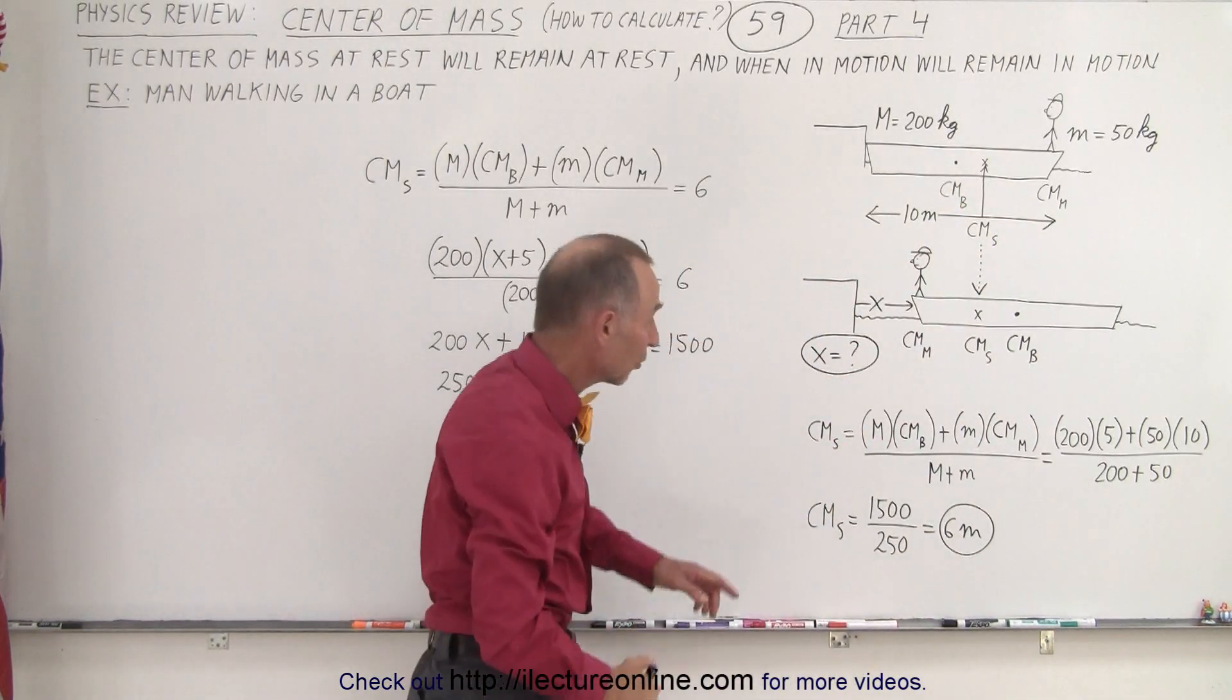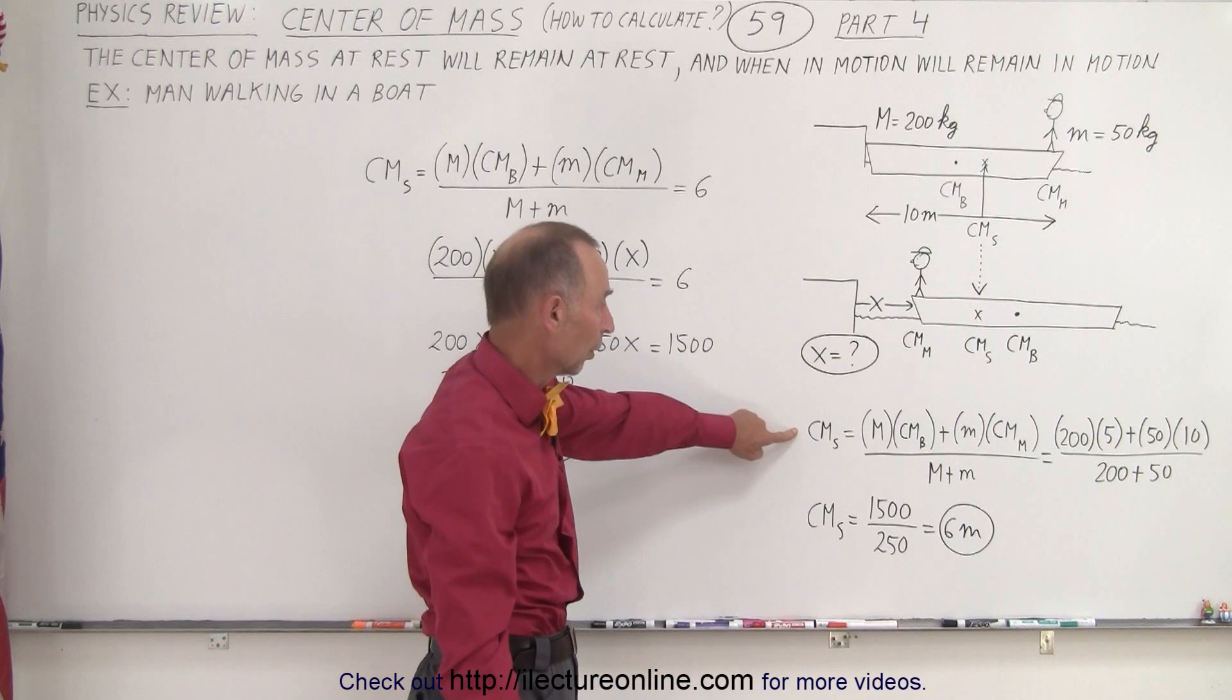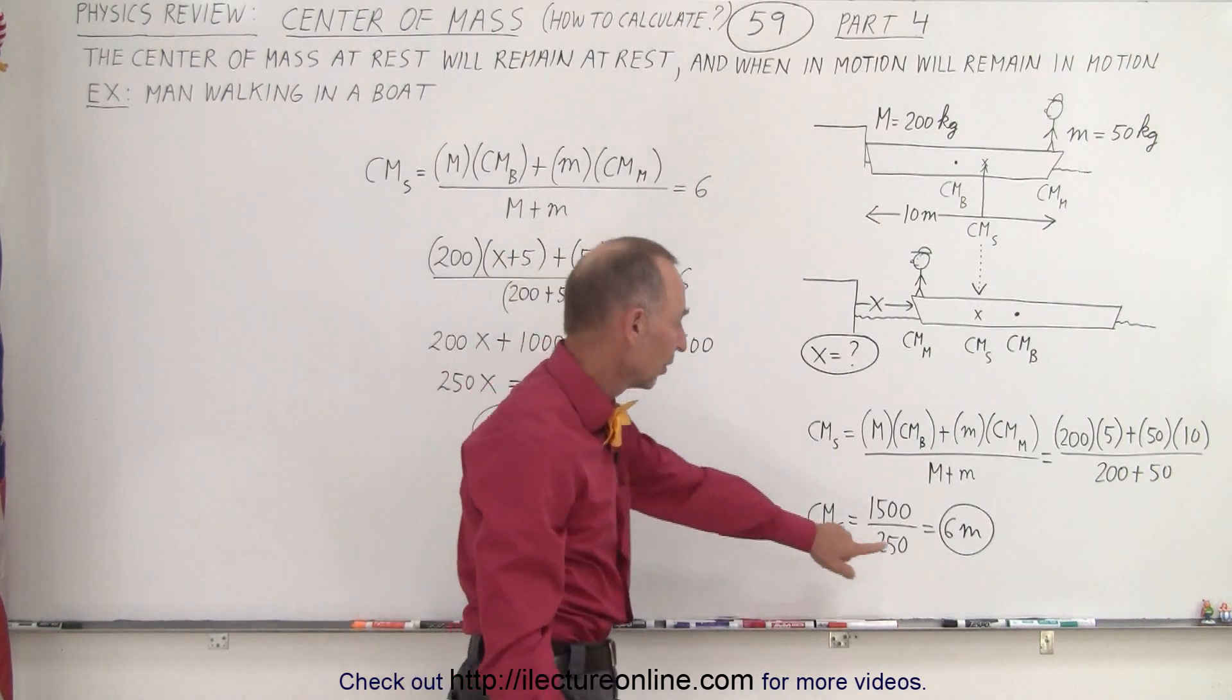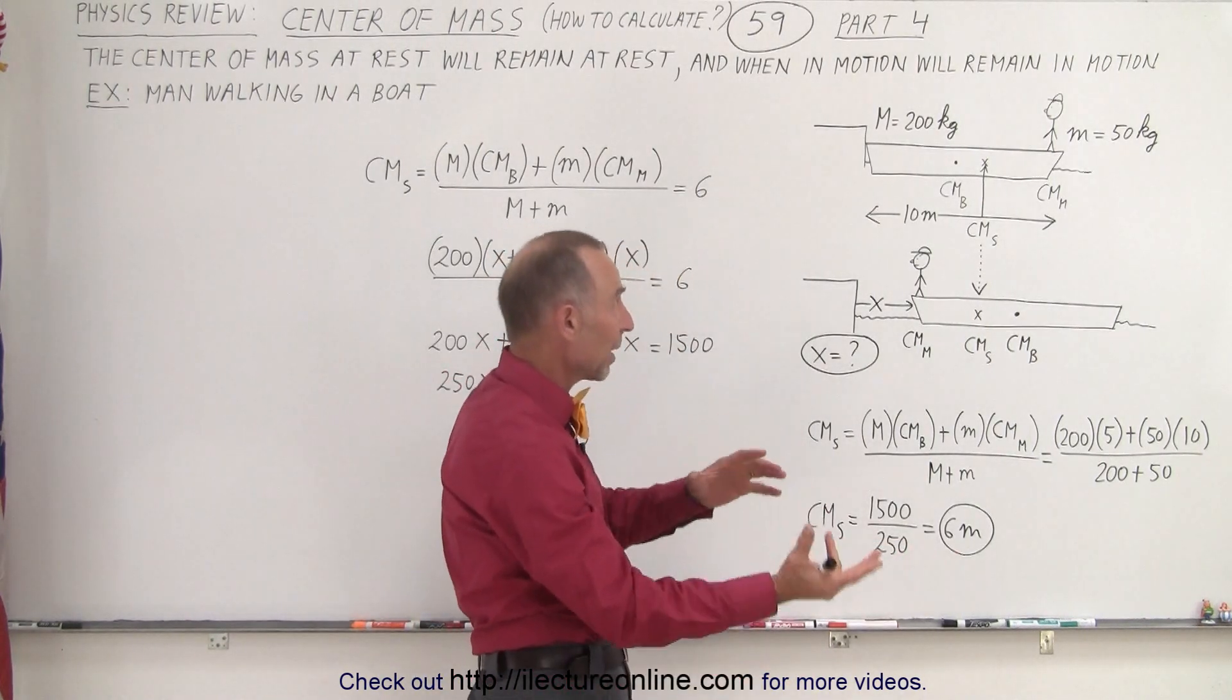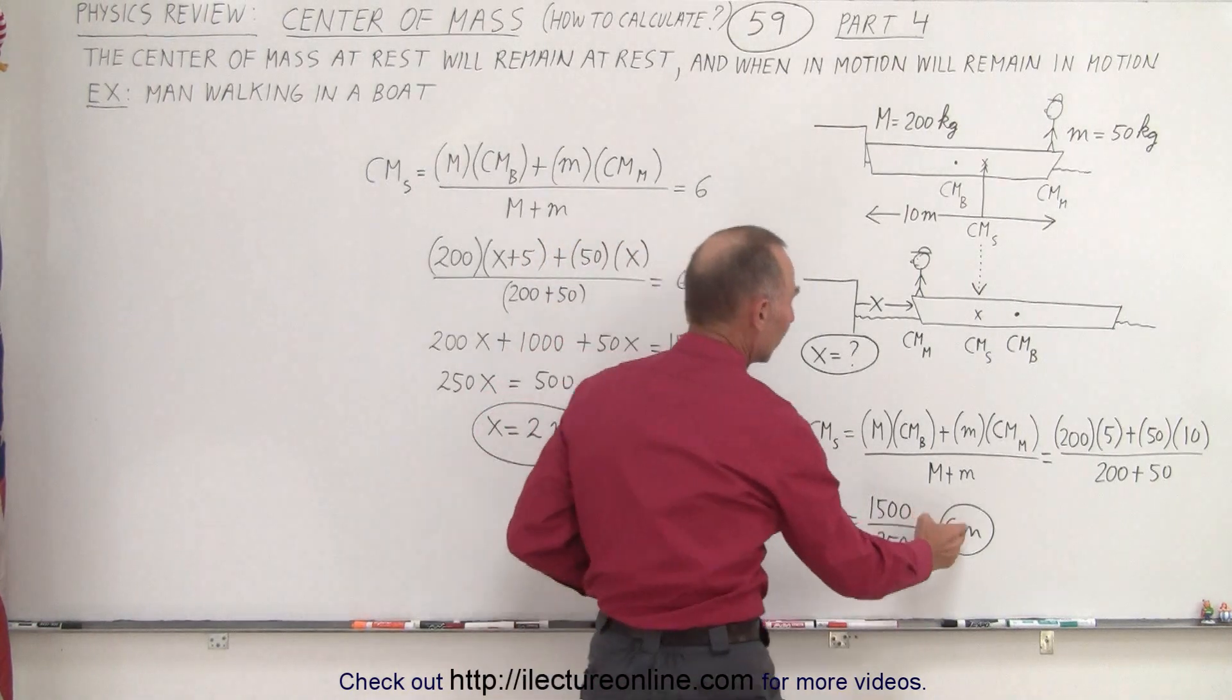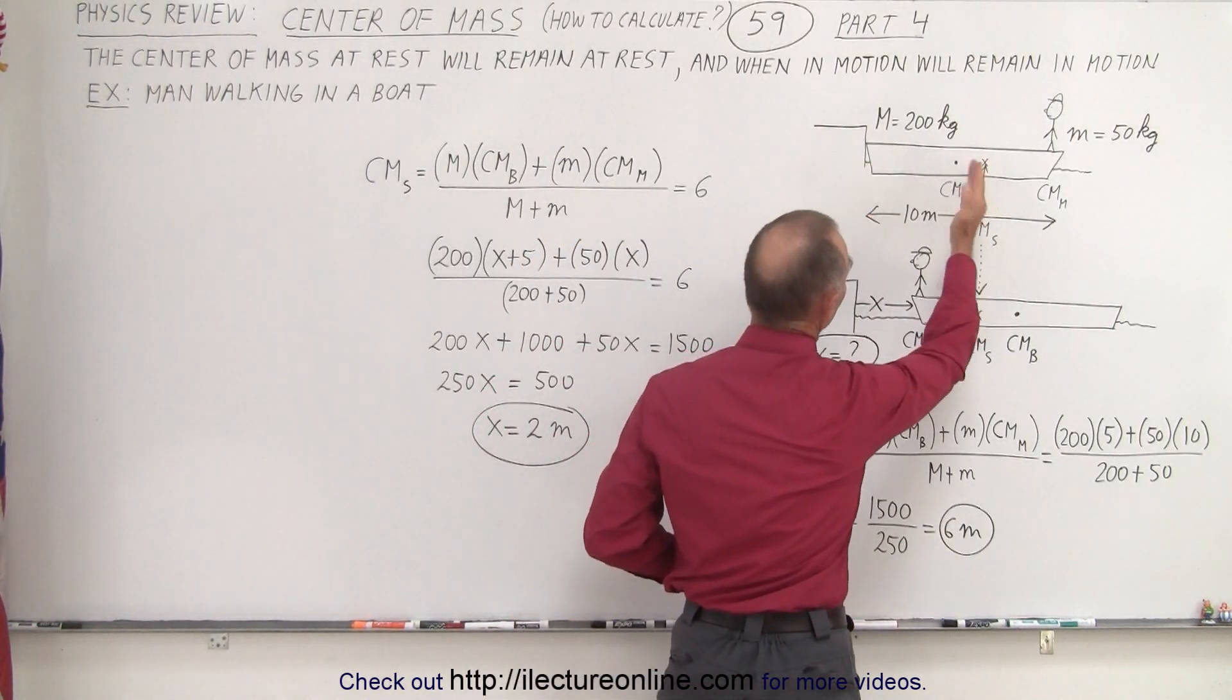We can calculate where that is using the principles we learned before. And so we determined that the center of mass of the system, the man and the boat together, is a distance of 6 meters from the edge of the boat.